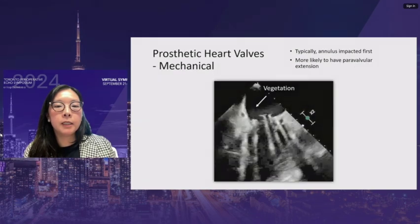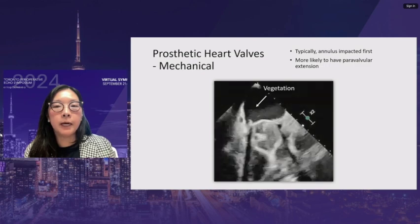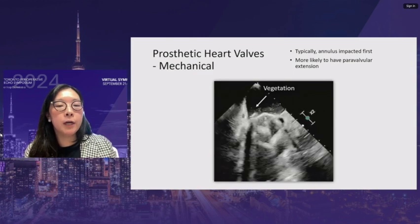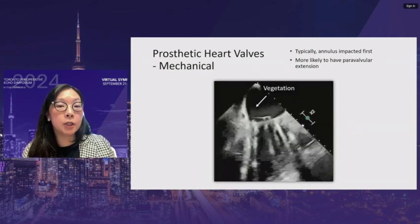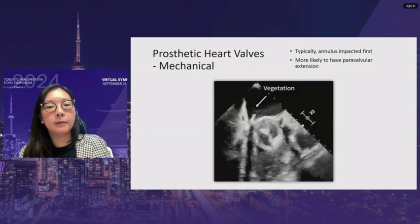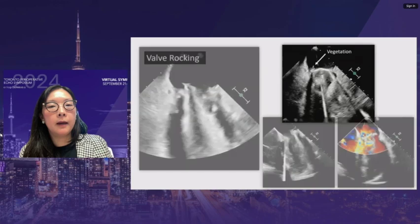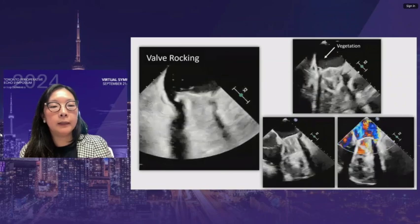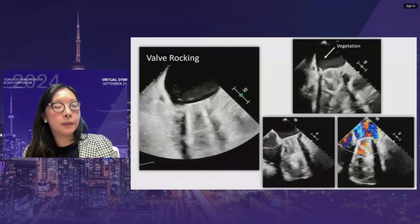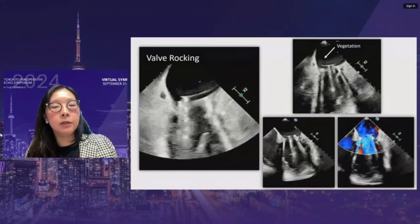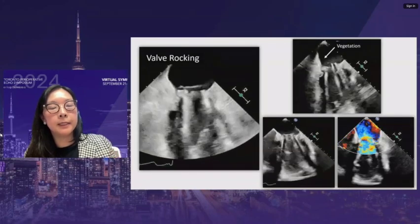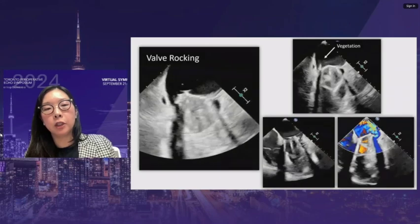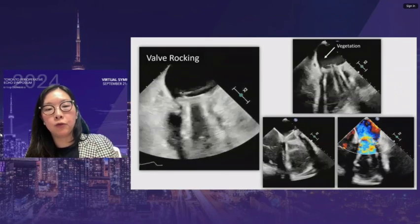For mechanical prosthetic heart valves, the discs are usually not involved; the annulus is impacted first and prosthetic paravalvular extension is more likely. Aortic paravalvular extension is actually more common than mitral. A case demonstrates dehiscence of the valve and rocking — an actual lack of connection to the annulus. Care must be taken not to confuse instability with rocking; a reconstructed pericardial annulus can appear to rock when it is not a true disconnection.